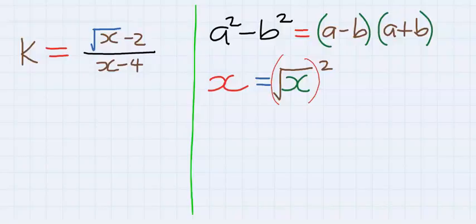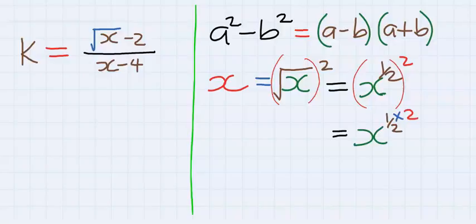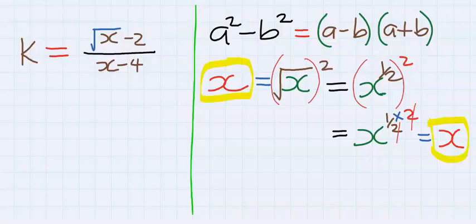Square root of x is the same as x to the power of half, then squared. This is the same as x to the power of half multiplied by two, and the two can cancel out, and you are left with x, which is the same as we started with.